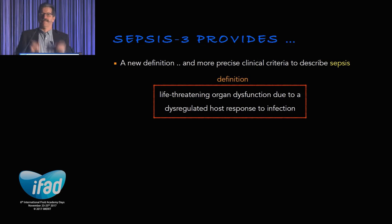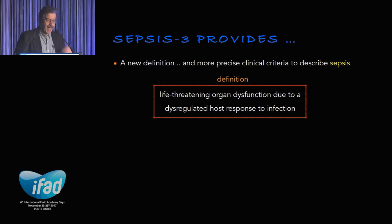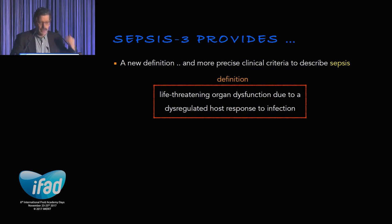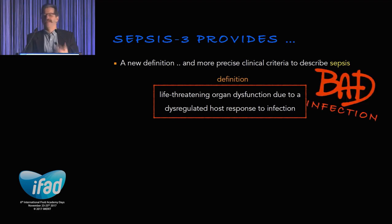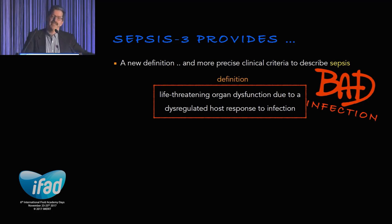We have a new definition. The essence of what something is — what the dictionary describes as a definition. We characterized it as a life-threatening organ dysfunction due to a dysregulated host response to infection. In other words, it takes these patients away from a bog-standard infection and makes them bad infection — the infection that ends up killing you. And it's the host response that kills you, not the bug per se. This is bad infection leading to organ dysfunction, leading to a threat to life.